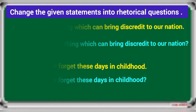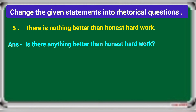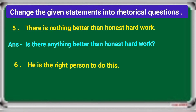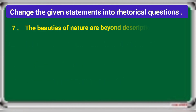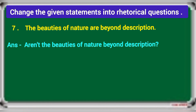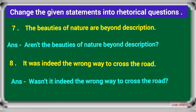Fifth: there is nothing better than honest hard work. The rhetorical question is: is there anything better than honest hard work? When 'nothing' is in the statement, use 'anything' in the rhetorical question. Sixth: he is the right person to do this. The rhetorical question is: isn't he the right person to do this? Seventh: the beauties of nature are beyond description. The rhetorical question is: aren't the beauties of nature beyond description? Eighth: it was indeed the wrong way to cross the road. The rhetorical question is: wasn't it indeed the wrong way to cross the road?